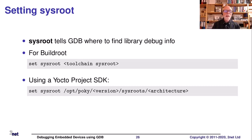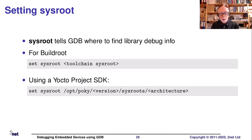Before we get to actually doing the debugging, we need to think about sysroots. When GDB running on your host encounters a library reference, it needs to know where to find the library to find its symbol table — it needs to know where your sysroot is, and you have to tell it. You type 'set sysroot' and then something like /opt/pocky/3.1.3/sysroots/architecture.